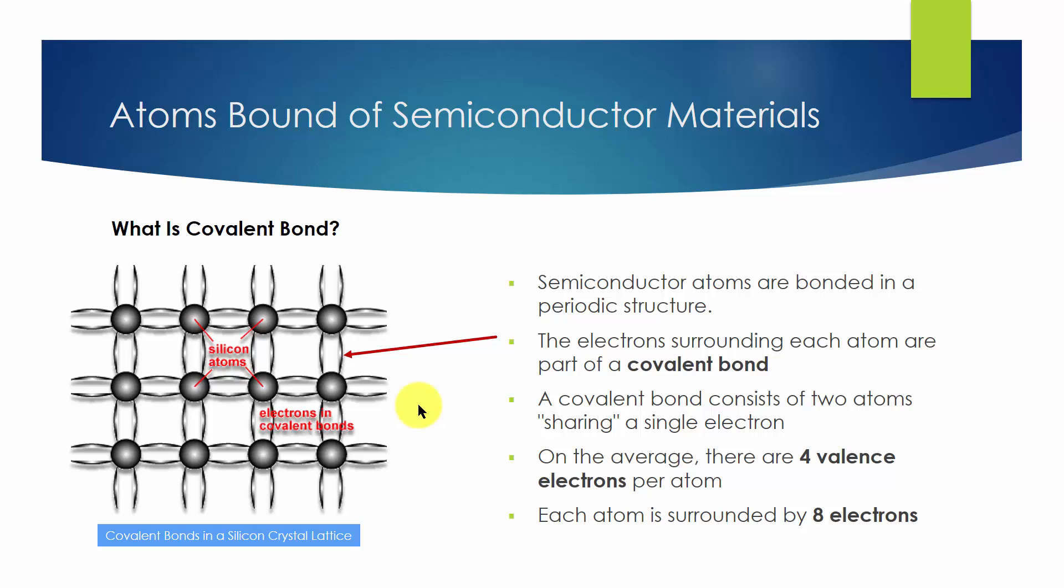However, only at absolute zero are all electrons in a bonded arrangement. At elevated temperatures, an electron can gain enough energy to escape from its bond. If this happens, the electron is free to move about the crystal lattice and participate in conduction.